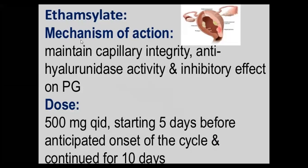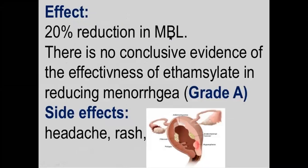Welcome back. In continuation, ethamsylate is 500 milligrams QID (four times a day), starting five days before the anticipated onset of the cycle. Unlike tranexamic acid and mefenamic acid which are taken during the period, ethamsylate has to be started five days before onset and continued for ten days. The effect is only a 20% reduction in menstrual blood loss. The main side effects are headache and rash.